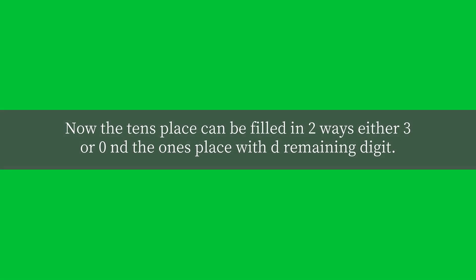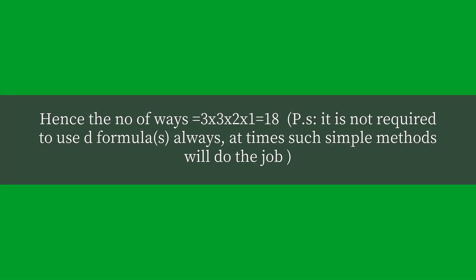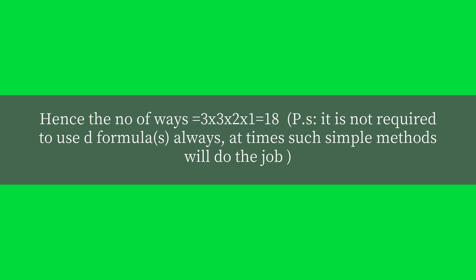Now the tens place can be filled in two ways — either 3 or 0 — and the units place with the remaining digit. Hence the number of ways equals 3 × 3 × 2 × 1 = 18.